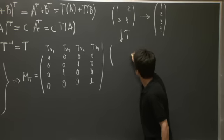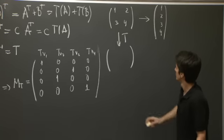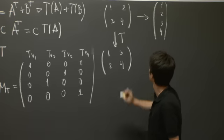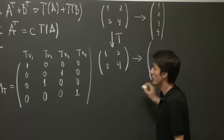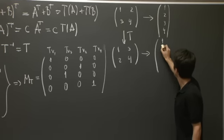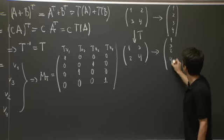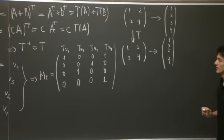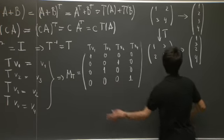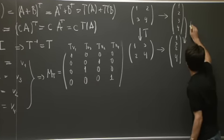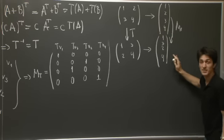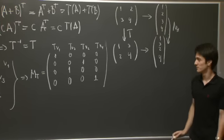T takes this to its transpose, 1, 3, 2, 4. So this, in the basis, is represented as 1, 3, 2, 4. And it's not hard to see that M_T, when M_T multiplies this vector, we get exactly this vector.